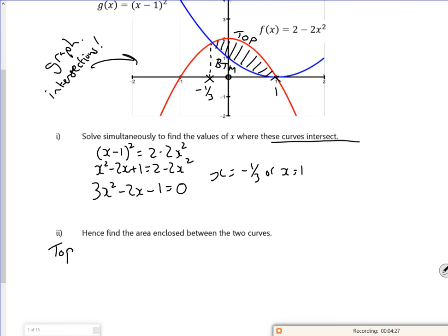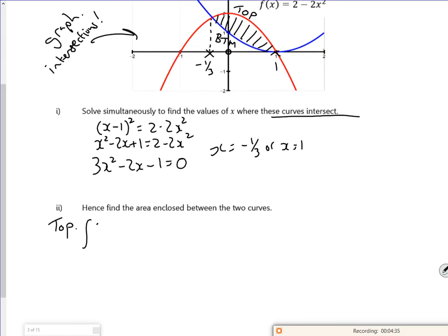So it says solve the areas. Okay, so the way I do it, I work out the top one, which is the integral of, so the top equation is f of x. So that's 2 minus 2x squared between minus a third and one. And I work out my bottom equation, which would be the integral between minus a third and one of x minus one all squared, or x squared minus 2x plus one. I'm going to cheat. I'm going to use my calculator.